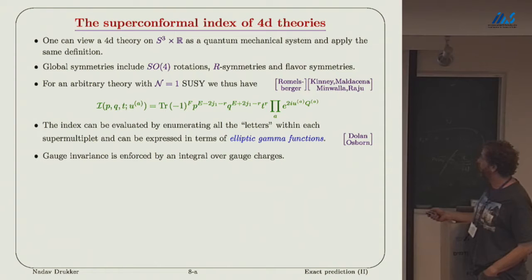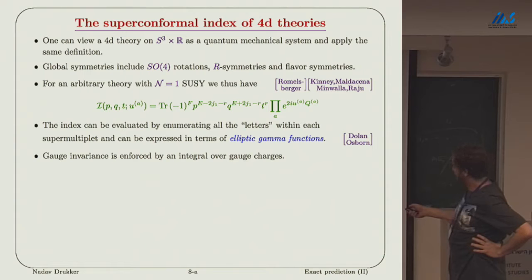There is a whole procedure that was done in these papers. You sum up the contributions for every multiplet. You look at all the fields that contribute and their charges and so on. The end result can be expressed in terms of functions known as elliptic gamma functions, which I will save you the definition because they won't be important for me.